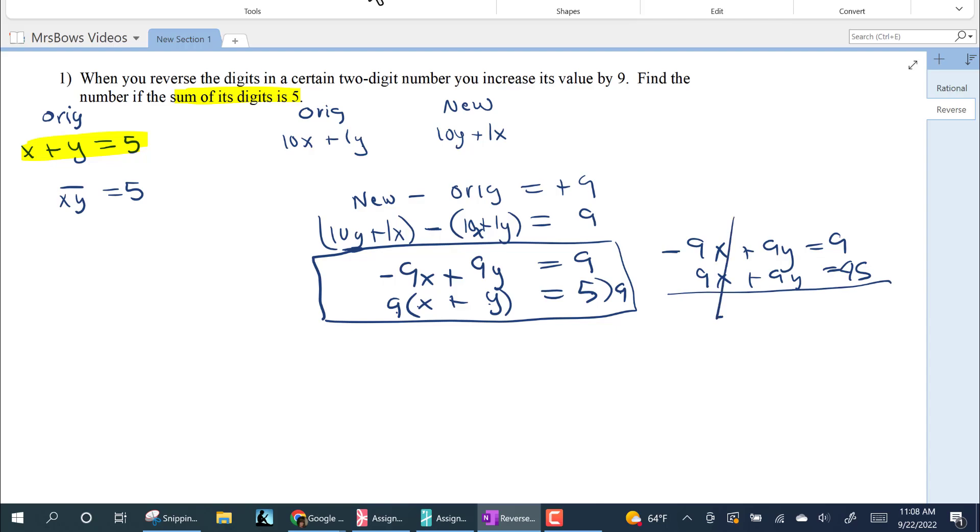And now we have a system that when you add the columns, the x's cancel. Nine y plus nine y is 18 y. Nine plus 45 is 54. When you divide both sides by 18, the y digit is three.